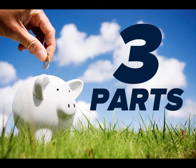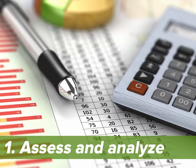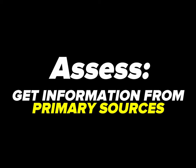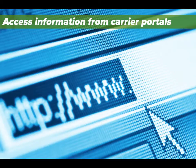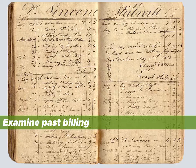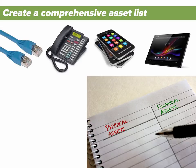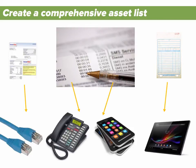A proper telecom expense management system has three key parts, starting with the part where you assess and analyze the current state of your telecom setup. By assess, we mean going through the process of gathering information from primary sources — the places that have the definitive information required to take a proper snapshot of your current telecom state. This means directly accessing information about your telecom plans and services from the carriers you use, looking at past billing, and generating a comprehensive list of assets. That asset list is an important one, because every item on every bill should be traceable back to an actual telecom asset. If you can't connect an item on a telecom bill back to an asset, that's a sure sign that something's wrong.